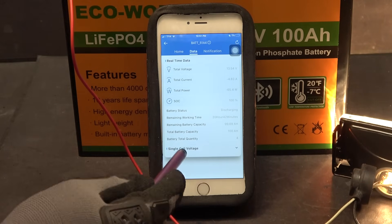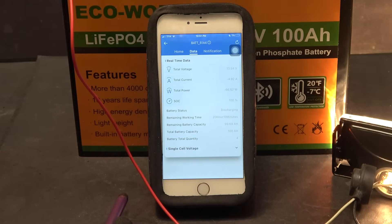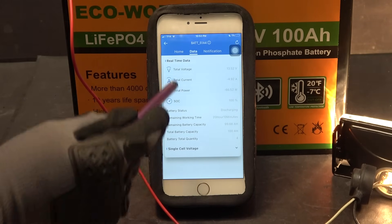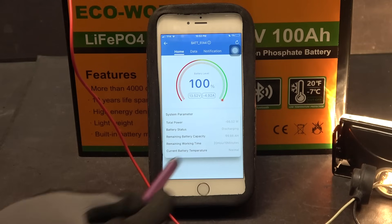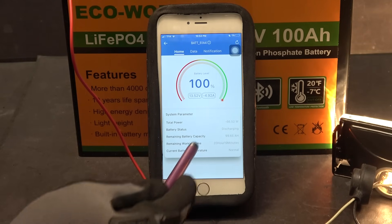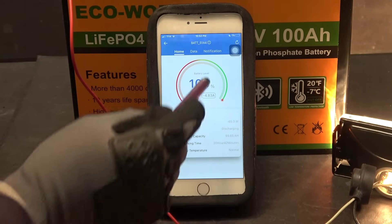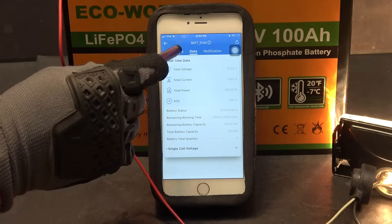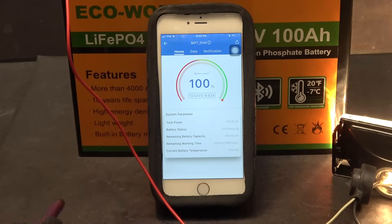The thing about this app is it only shows you all the data but it does not let you turn on and off the battery. So let's go back to the first page. There's no function to turn on or off. Second page and the last page. That's all about this app.